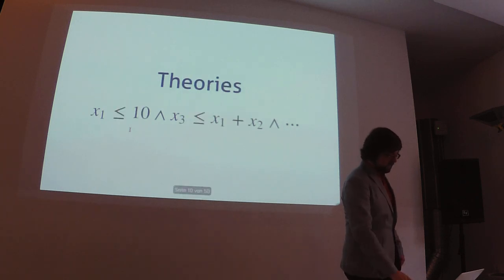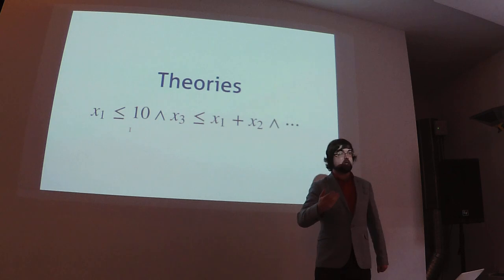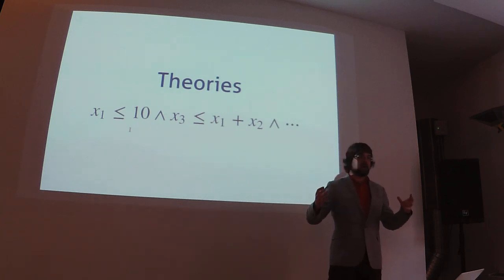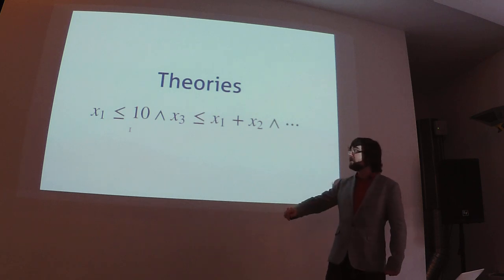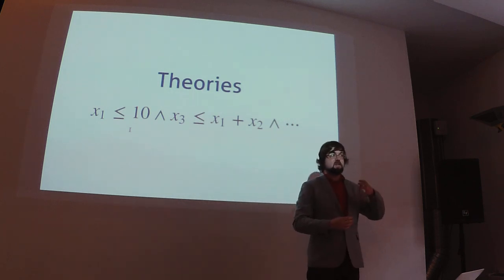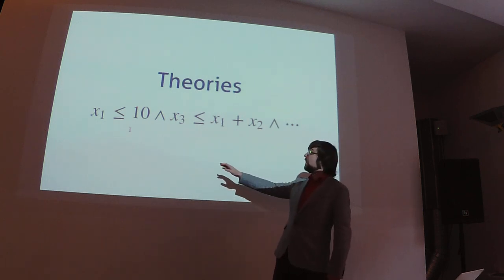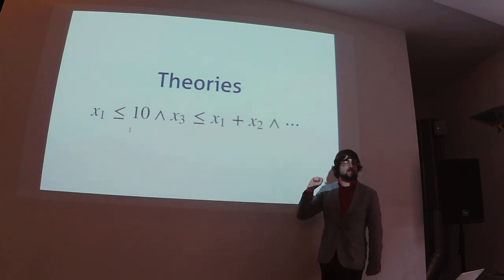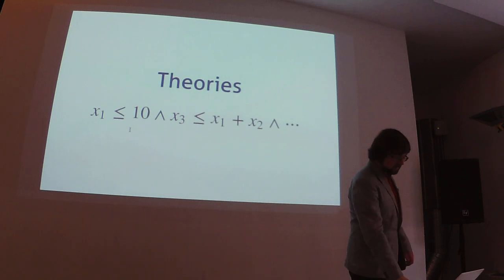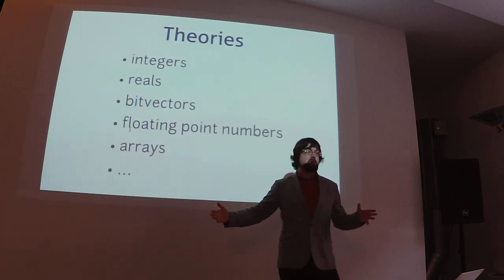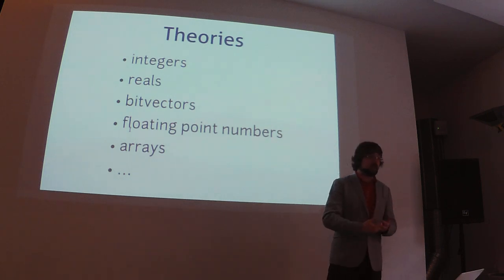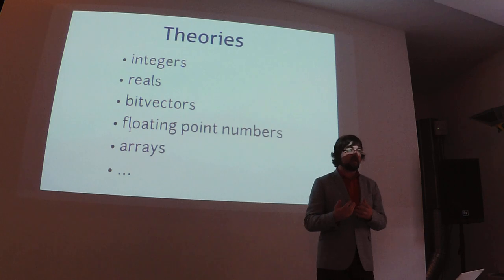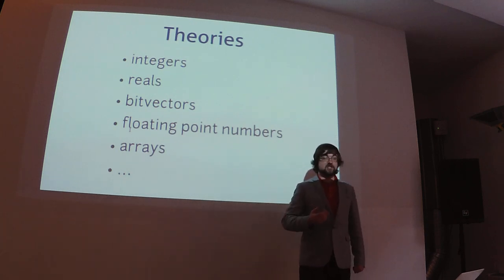In practice, this makes it pretty difficult to express non-trivial problems in terms of pure SAT. What SMT solvers give us is extra theories — extra kinds of logic that we can use in the same kind of formula setup as a SAT solver. Each theory gives us different kinds of variables. Instead of having a Boolean, we might have an integer or a real number. It also gives us other kinds of constraints like less-than and operations like addition. With modern SMT solvers, there is a really long list of theories you can use.